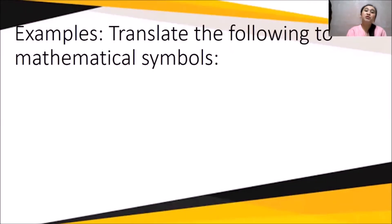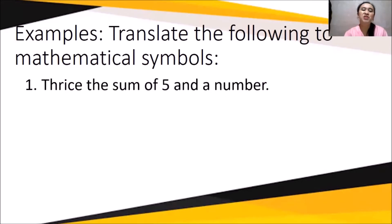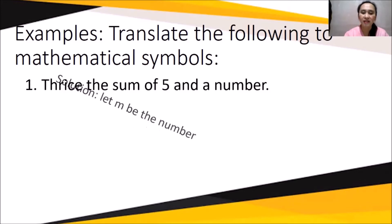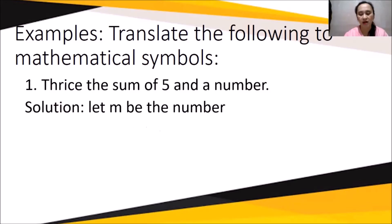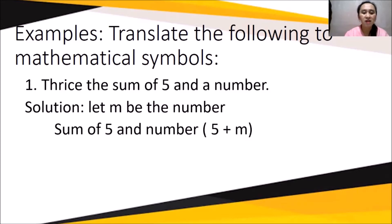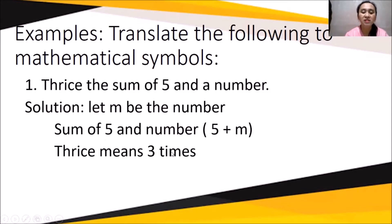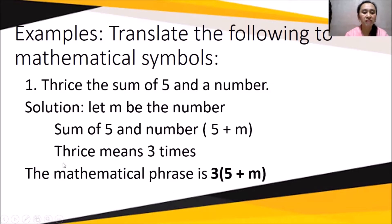Now, examples: translate the following to mathematical symbols. If the given is 'twice the sum of five and a number,' a number can represent any letter from the English alphabet. Let m be the number. The sum of five and a number is five plus m. The word 'twice' means two times, so the mathematical phrase is 2(5 + m).